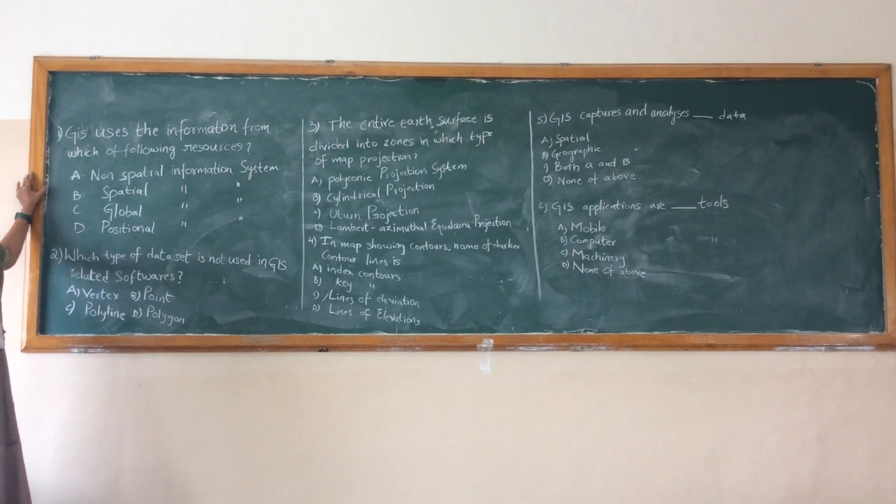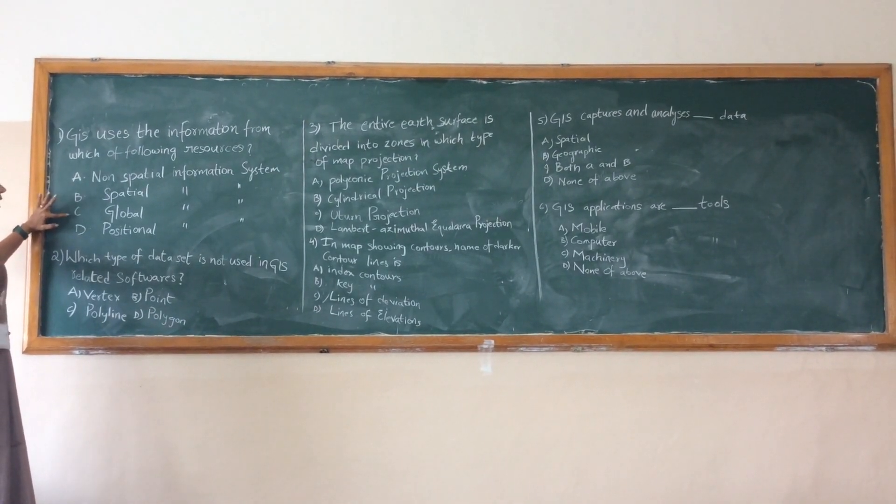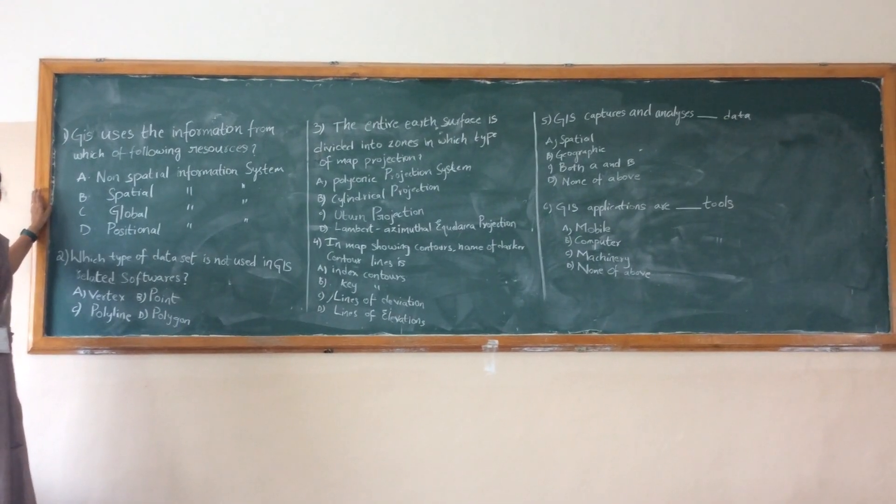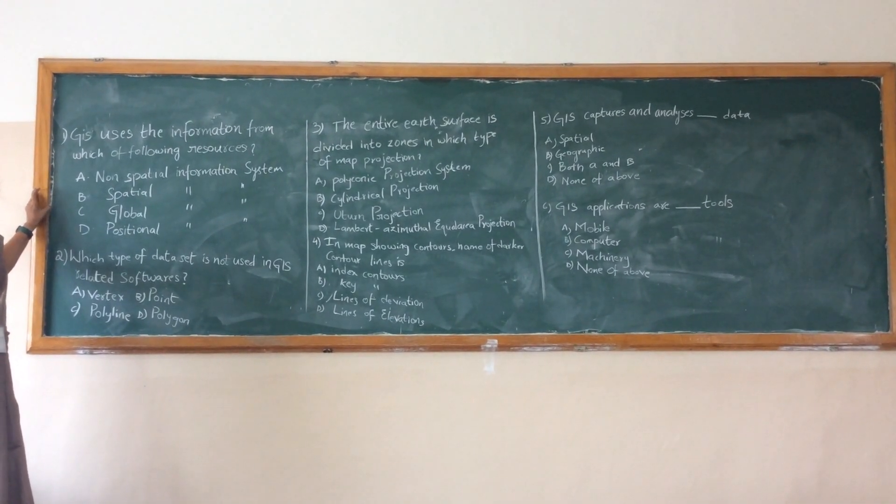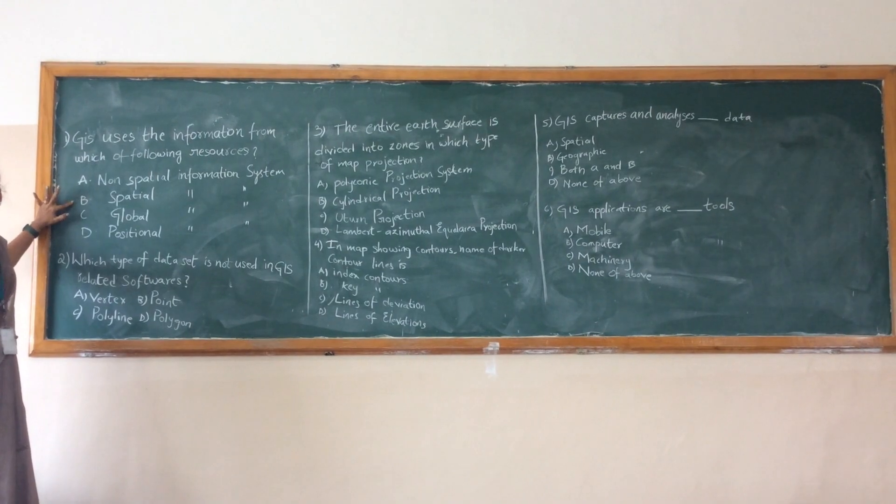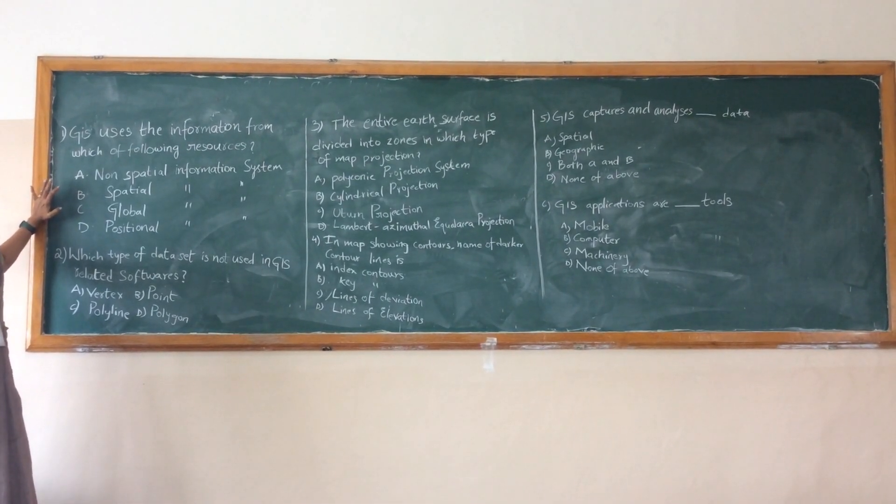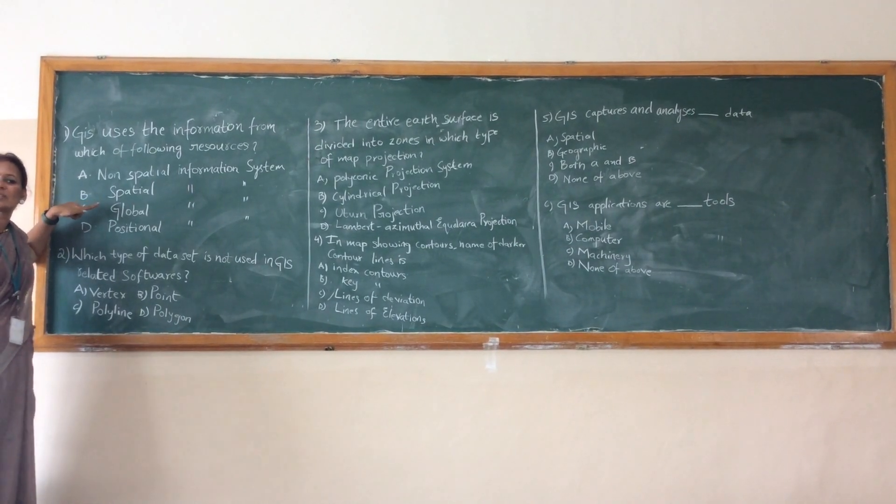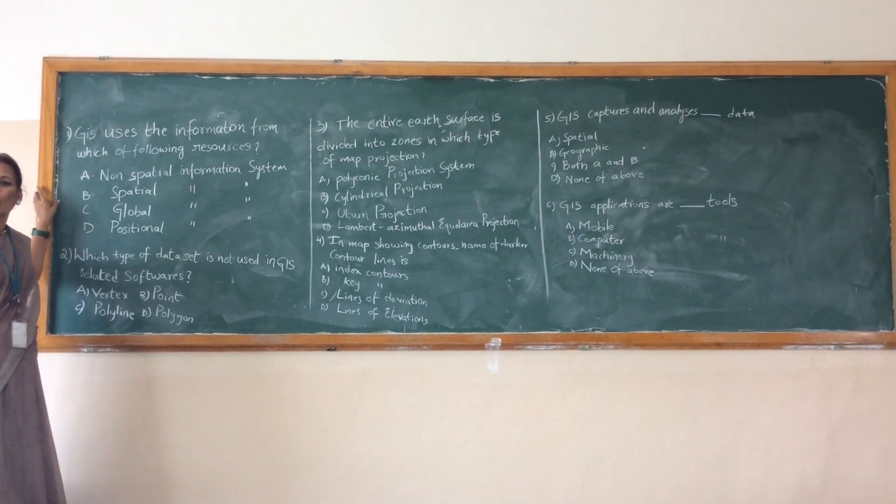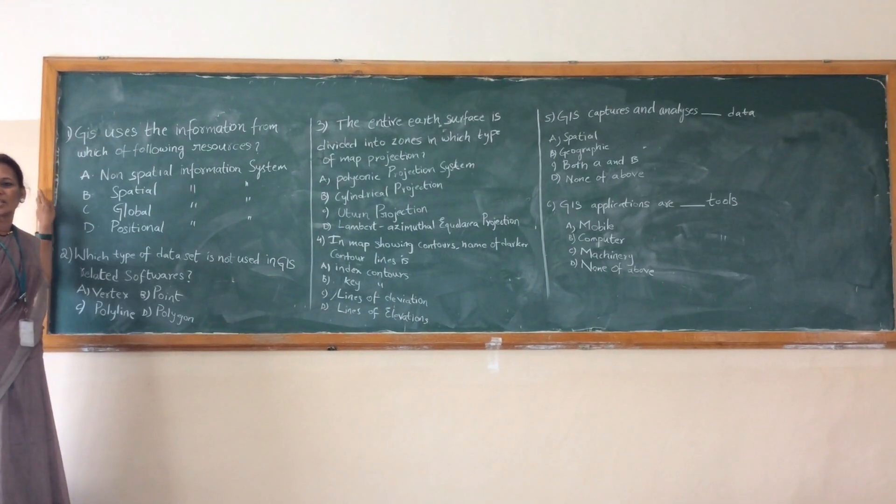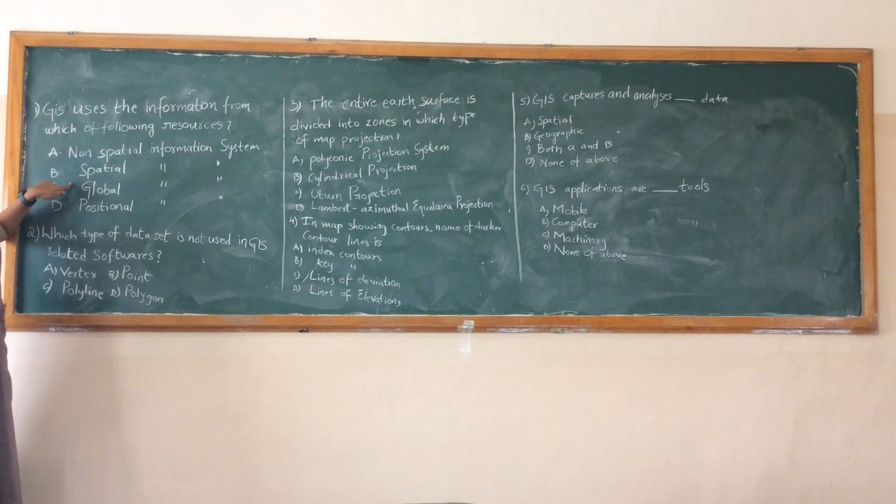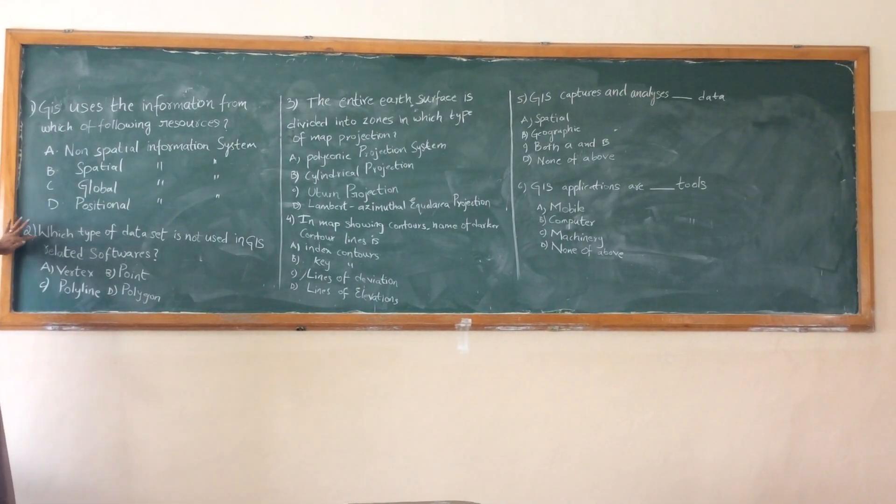Global information system? Is it correct? Spatial information system. Spatial information system has actually non-spatial. Spatial information system has got two topics. One is nothing but the raster information. Second one is nothing but the vector information. This is only the correct answer for this one. Please note about this one.